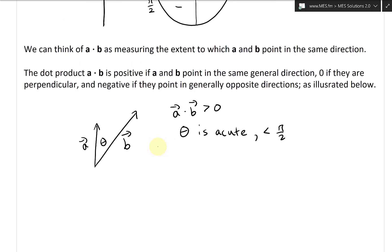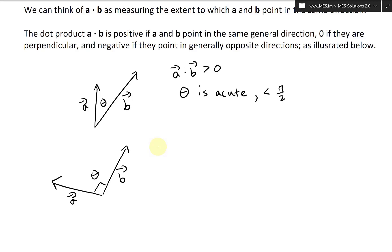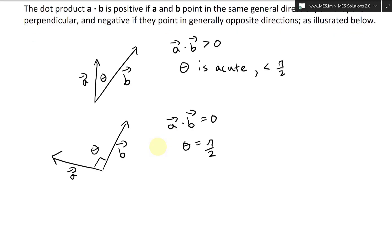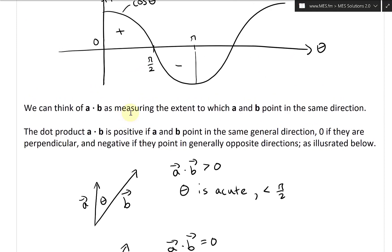If theta equals pi over two, the dot product is going to be zero and the vectors are perpendicular. Here's vector b and vector a, and the angle between them is 90 degrees. So a dot b equals zero, and theta equals pi over two radians, or 90 degrees.